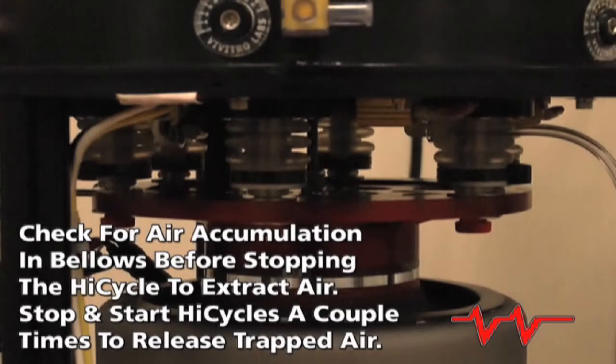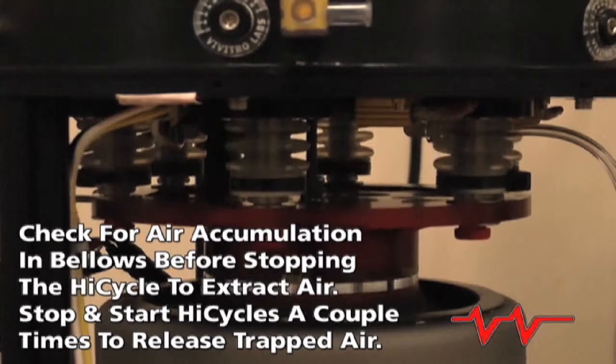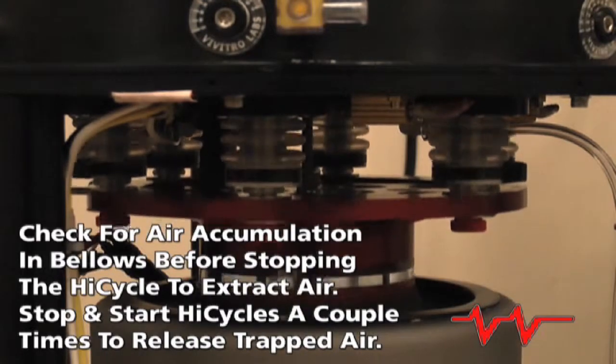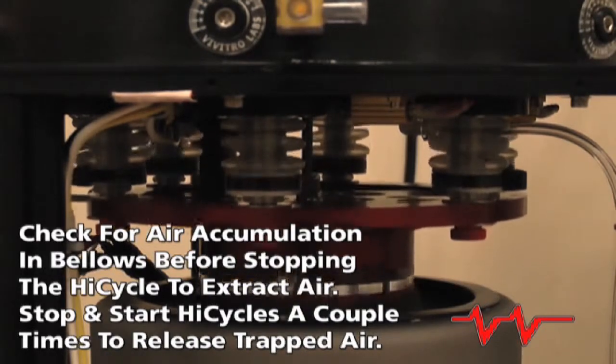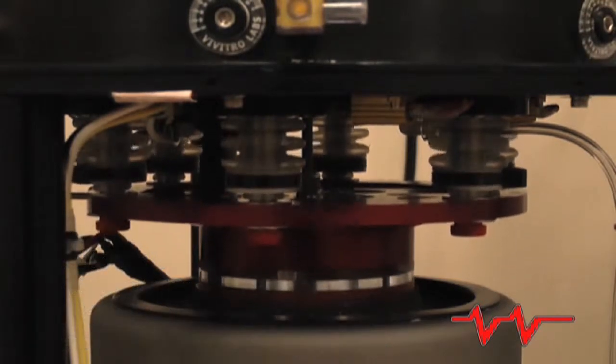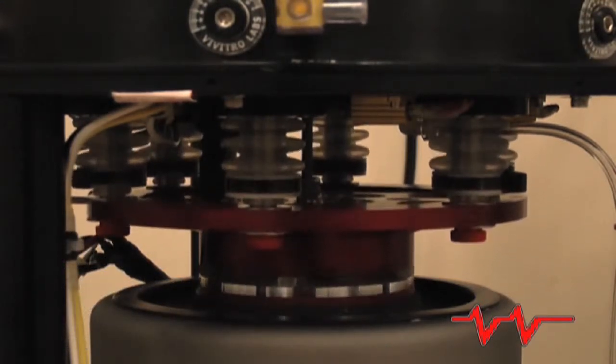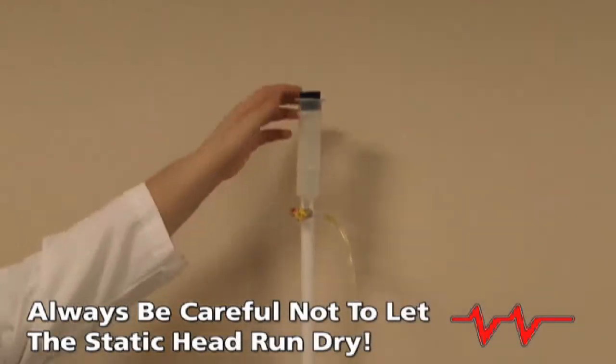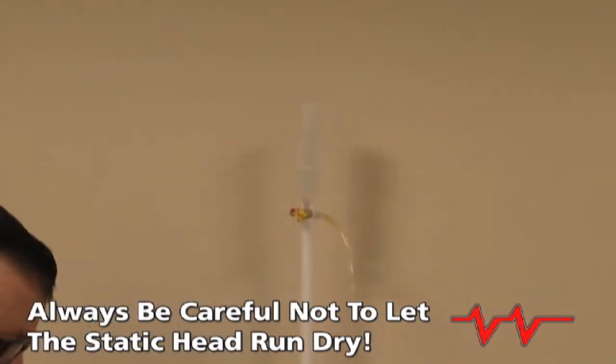Keep in mind that air sometimes accumulates in the bellows and releases when the HiCycle is stopped then started again. If this is the case, the HiCycle can be stopped and started a couple times to release the trapped air, which can then be extracted. It is a good idea to do this before stopping the HiCycle to extract air, as more bubbles may be released when the HiCycle starts again. With any of these extraction techniques, always be careful not to let the static head run dry.